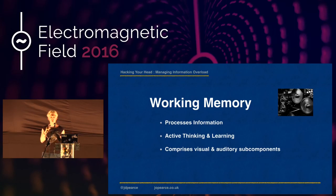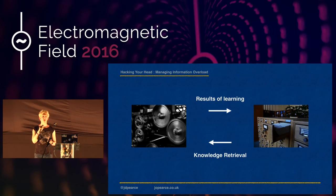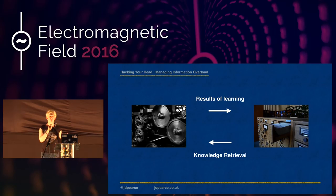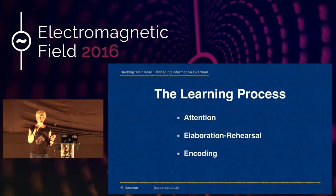Long-term memory has enormous capacity, but cannot engage in conscious thinking or learning processes. So they work together: learning takes place in working memory, and the results are stored in long-term memory. I want to briefly outline three of the main processes we can hack to alter the way we learn: attention, elaboration rehearsal, and encoding.